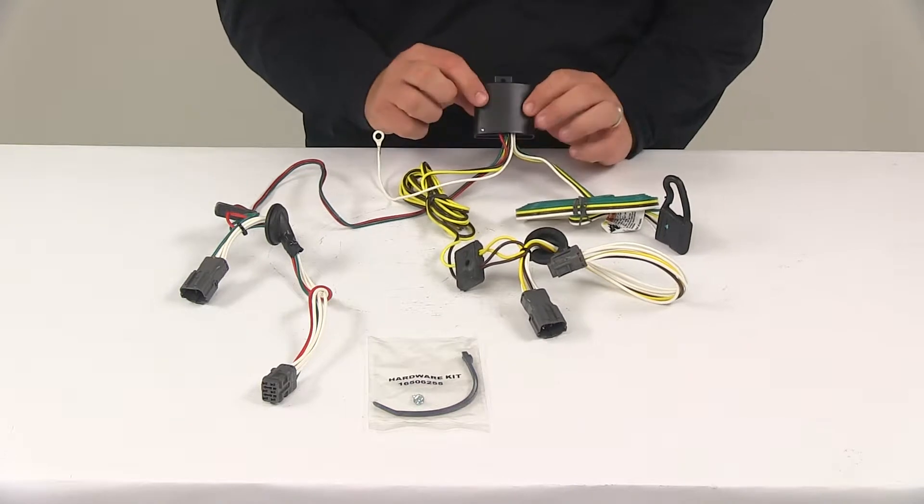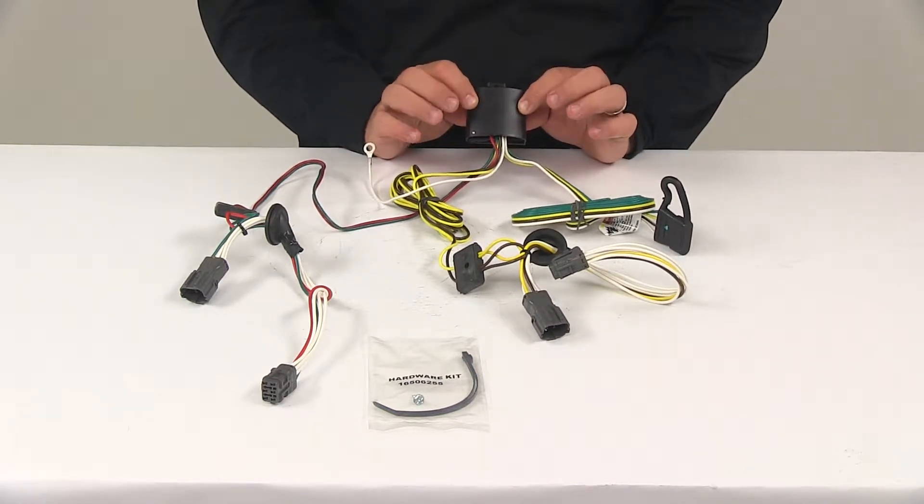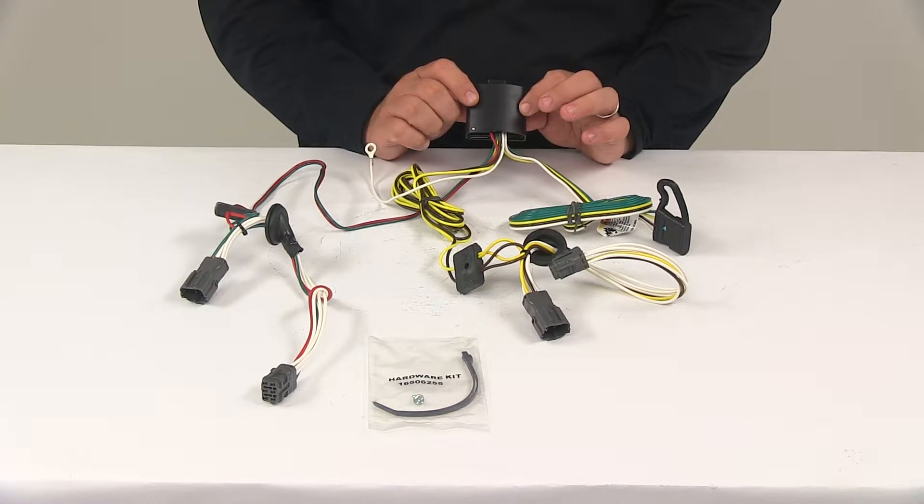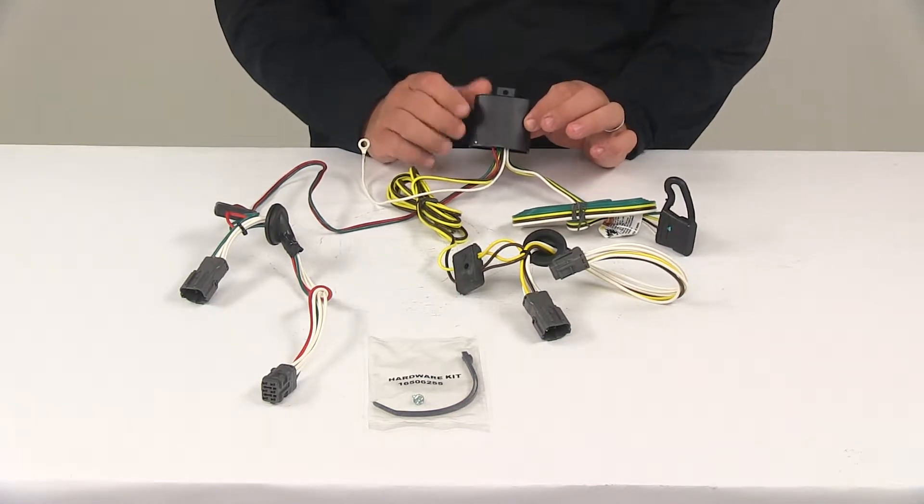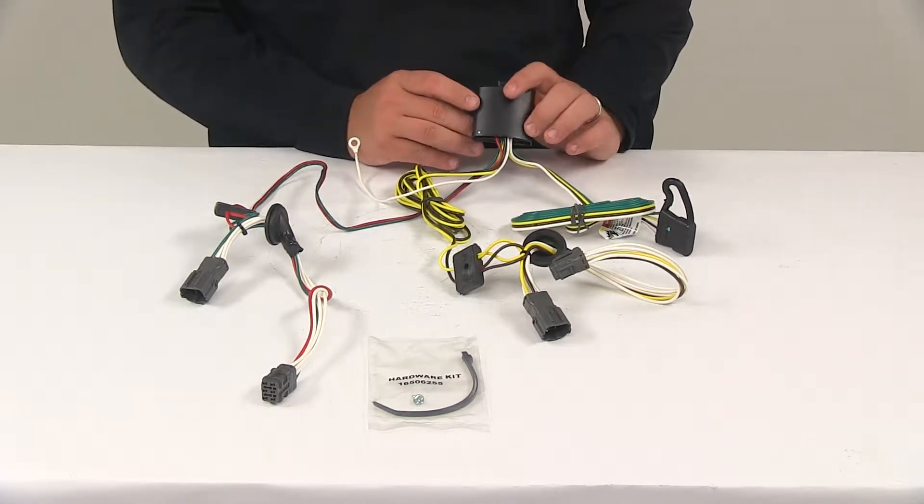Now, the black box right here, this is the included circuit-protected tail light converter. This is going to ensure that your vehicle's wiring matches out of your trailers. It's going to provide protection against electrical shorts and overloads.